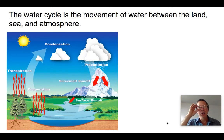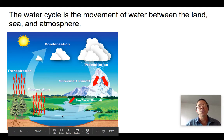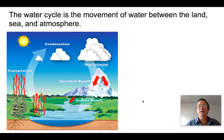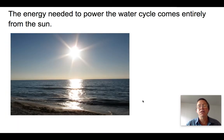The water cycle refers to the movement of water molecules from the ocean or other surface water surfaces into the atmosphere and then back down to the surface of the Earth. The first thing you need to know about it is it's powered by the Sun — it's a solar powered system.